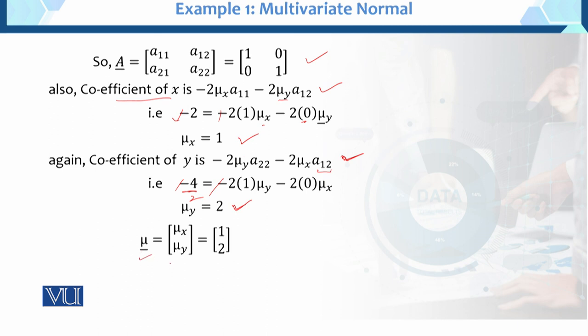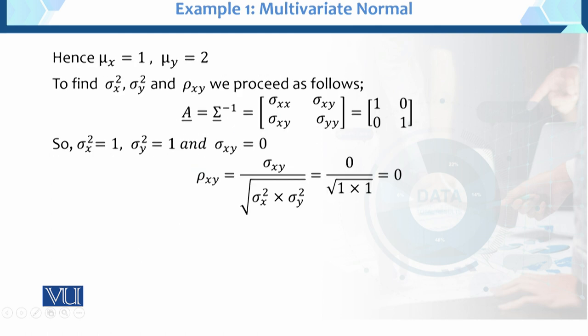So the mean vector values are determined: mu_x equals 1 and mu_y equals 2. We have successfully found one part of the example — the mean vector values are now determined.